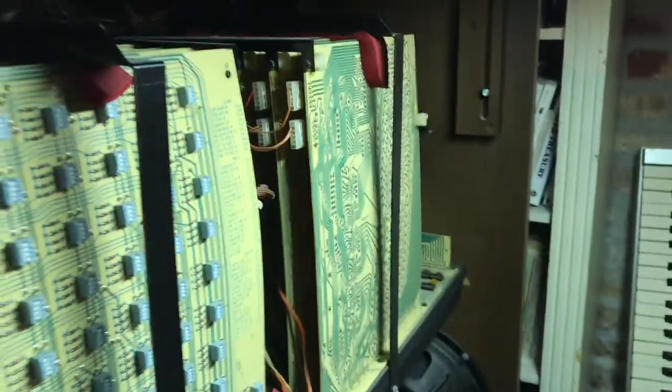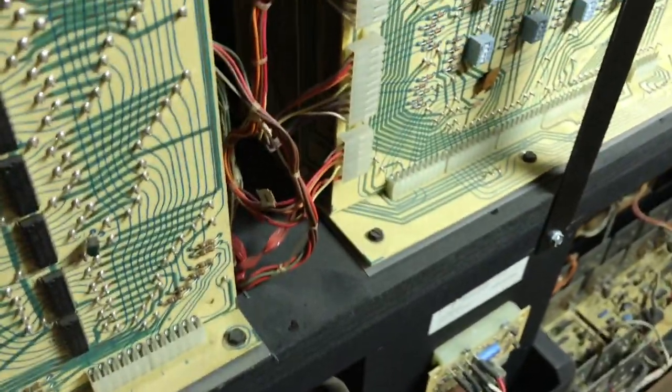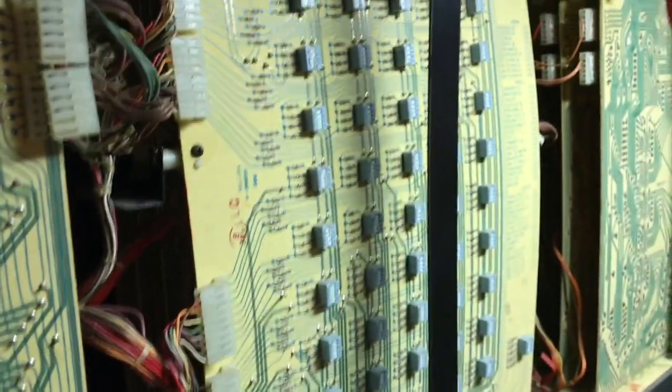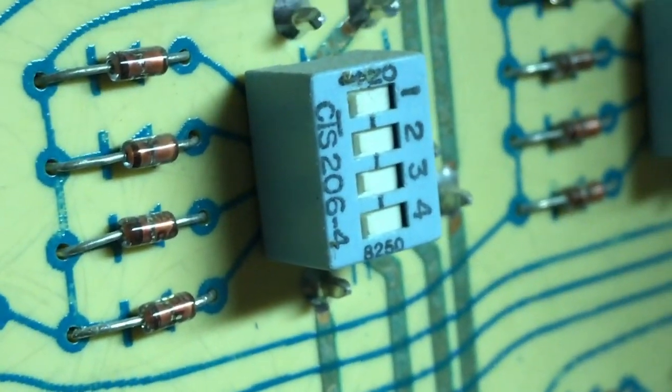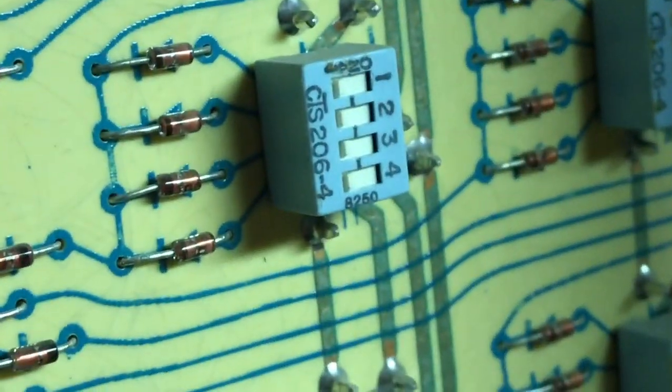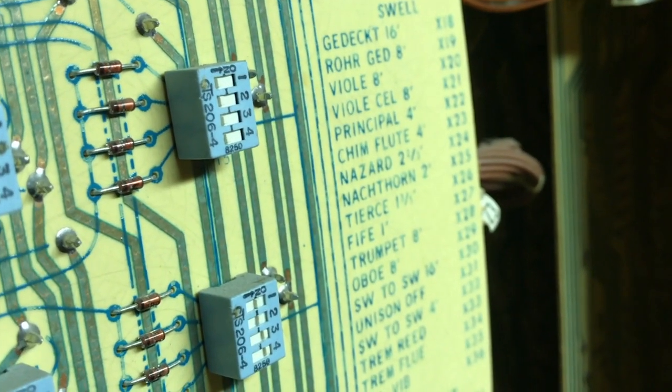you are going to see all of these circuit boards here, you're going to see just the general insides of the organ, and you're going to see this board here right in the center. You're going to see all of these little switches here, very small, hopefully you can see that, and you're going to see a list of all the stop tabs on the organ.